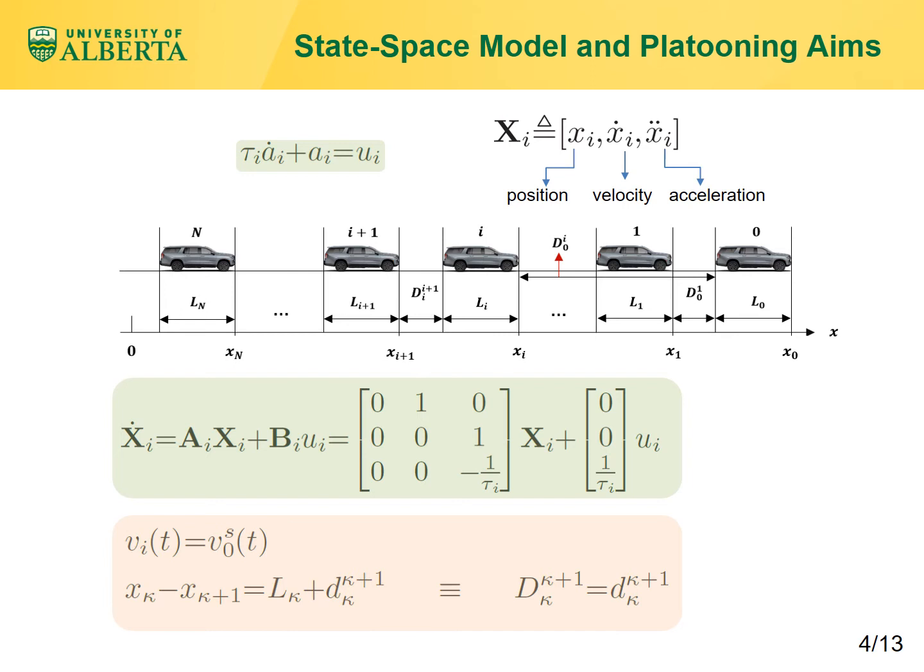This means the controller's role is to make capital D subscript κ superscript κ+1 equal to small d with the same subscripts and superscripts as the desired distance.